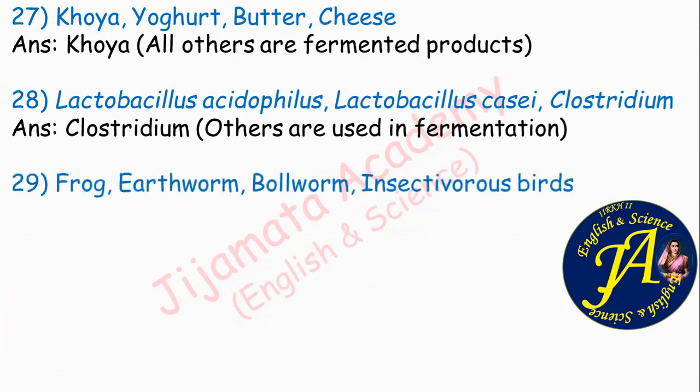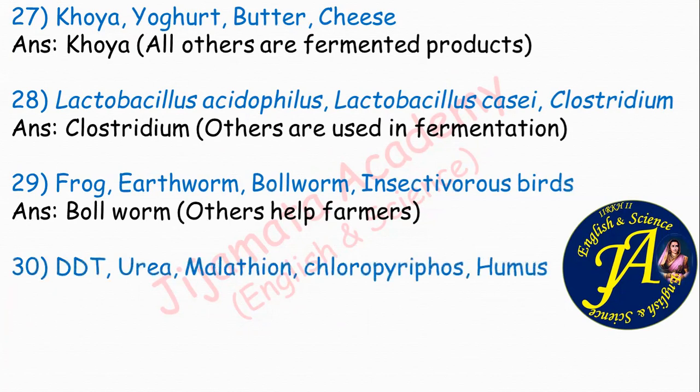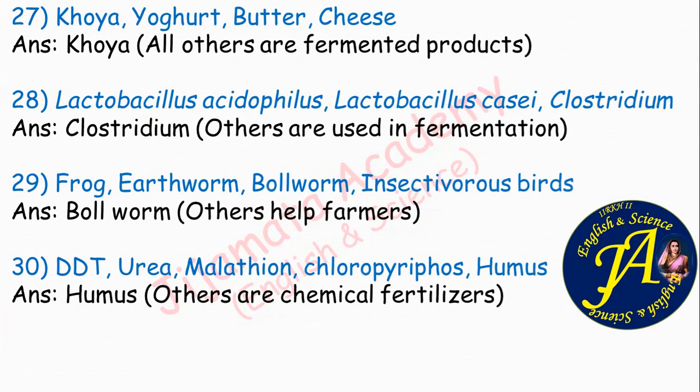Frog, earthworm, bollworm, insectivorous birds. The correct answer is bollworm, because all others help farmers. DDT, urea, malathion, chlorpyrifos, humus. The correct answer is humus, because DDT, urea, malathion, and chlorpyrifos are chemical fertilizers while humus is an organic fertilizer.